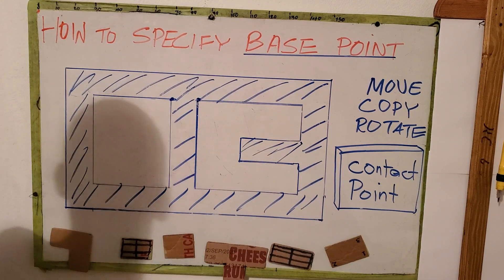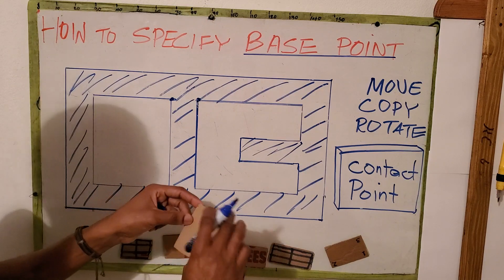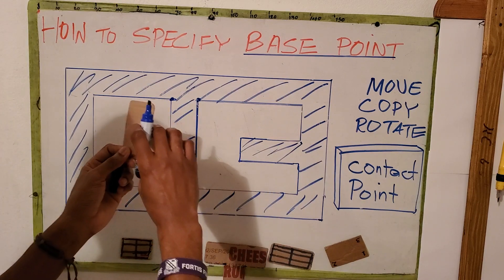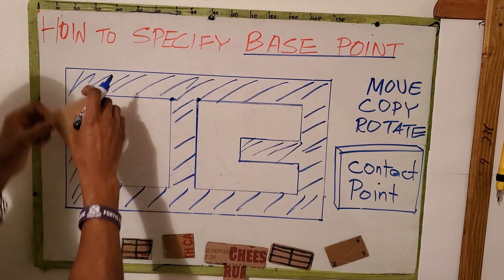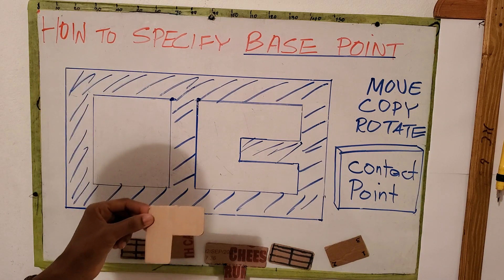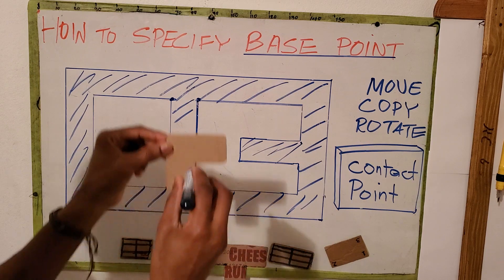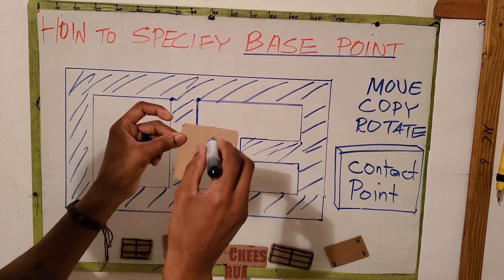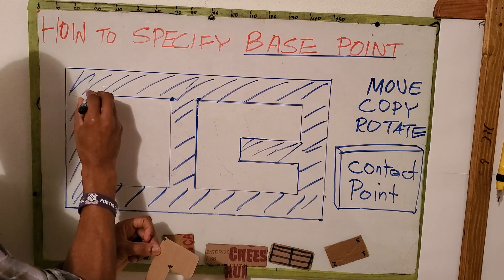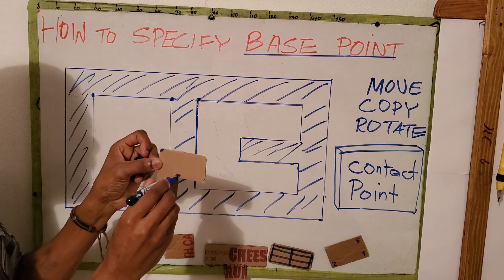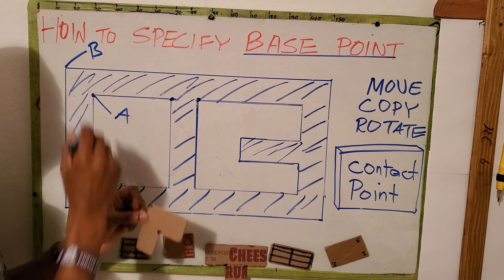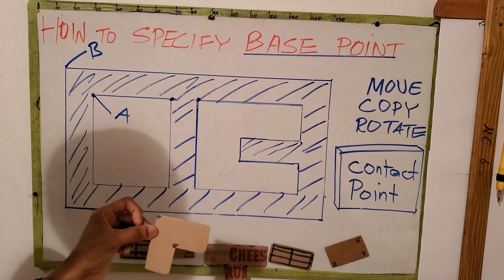Next example: say I wish to place this L-stiffener at this corner here. In this case I have two options — I could choose here as my base point, or I could choose here as my base point. Now if I choose here as my base point, which of these would be my snappable destination point?